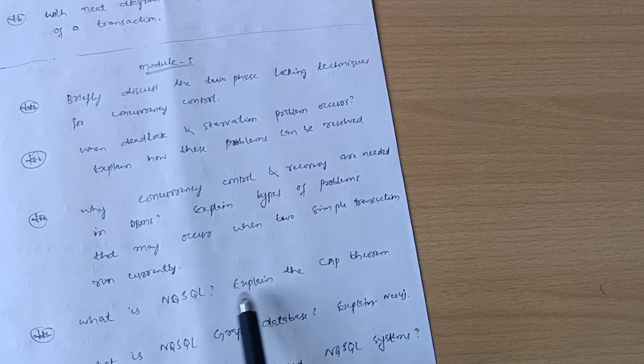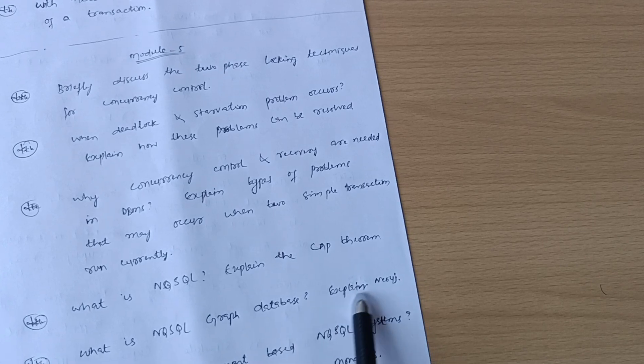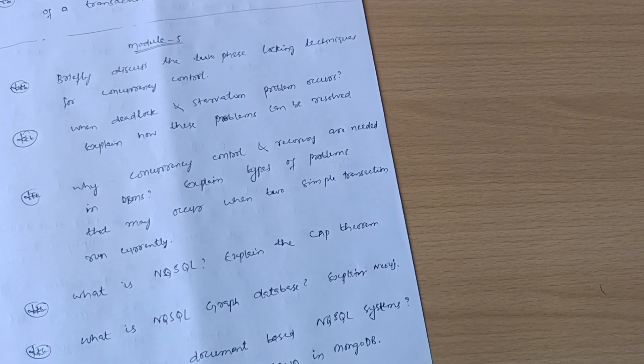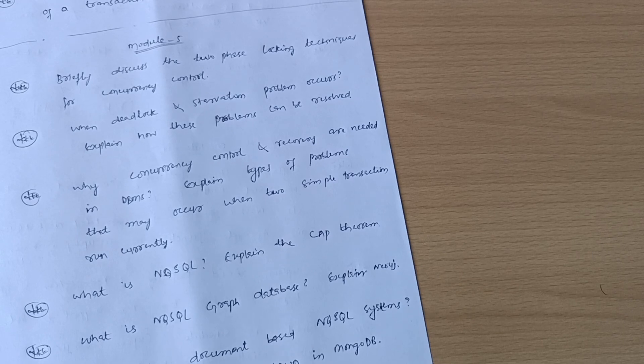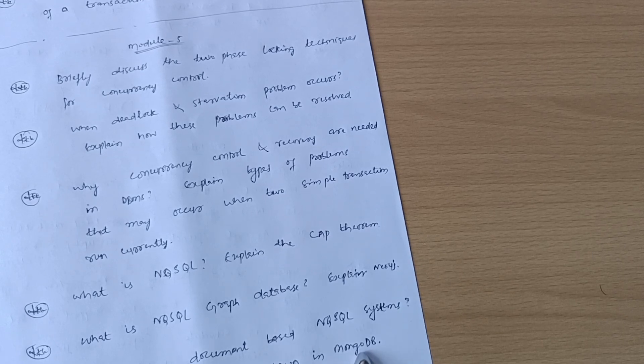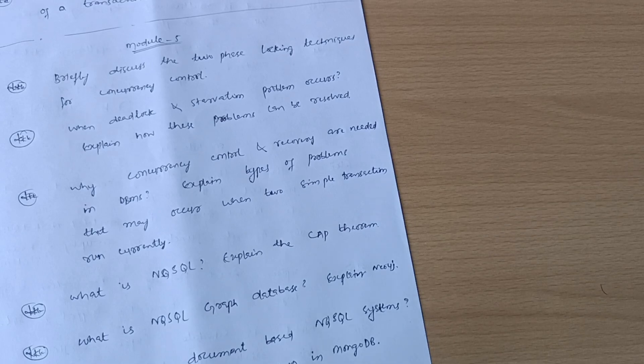What is NoSQL? Explain the CAP theorem. What is NoSQL graph or database? Explain Neo4j. What are document-based NoSQL systems? Explain basic CRUD operations in MongoDB.